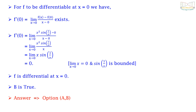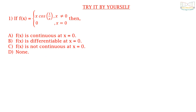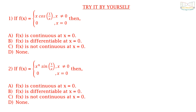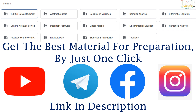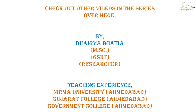The correct answers are option (a) and option (b). Here are some questions for you to try. First: if f(x) = x cos(1/x) for x ≠ 0 and f(0) = 0, is f continuous at x = 0, differentiable at x = 0, not continuous, or none? Second: if f(x) = xⁿ sin(1/x) for x ≠ 0 and f(0) = 0, is f continuous at x = 0, differentiable, not continuous, or none? Comment your answers below with proper explanation. Get the best preparation material via the link in the description. Thank you, and check out the other videos in the series.